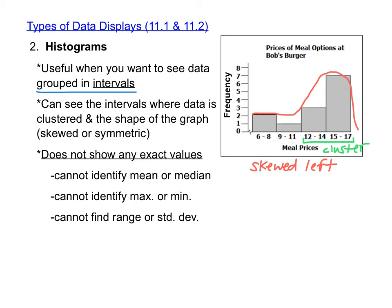The disadvantage of a histogram, though, is that it does not show any exact values. If we look at this particular histogram, we have no way of calculating the mean or the median because we don't even know the exact values — we just know that two meals are between 6 dollars and 8 dollars. But we don't know if one of them might be 6 dollars and 50 cents and another might be 7 dollars 99 cents. We also can't identify the maximum or the minimum value. We just know that the minimum value is somewhere between 6 and 8 dollars and the maximum value is somewhere between 15 and 17 dollars. We also cannot find the range or the standard deviation because all of these things require us to have the exact data values.